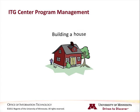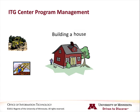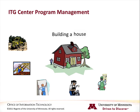One example that helps to illustrate how program management can be helpful is building a house. Building a house involves many interrelated projects, such as the foundation and site work, framing, exterior finishes, mechanical rough-ins, interior finishes, and landscaping. These projects have to happen in a certain order, and what happens with one project may impact the other projects.